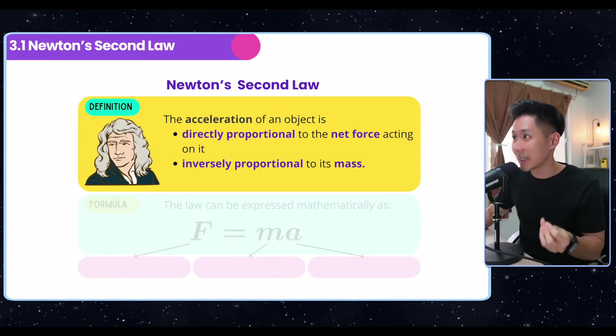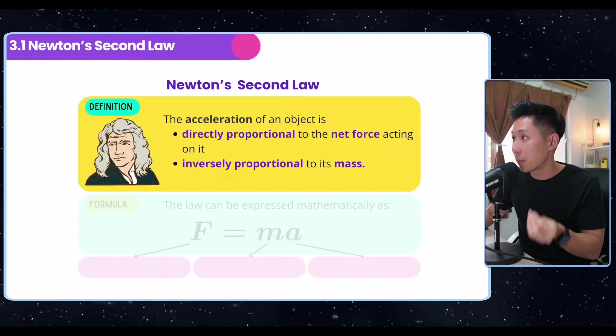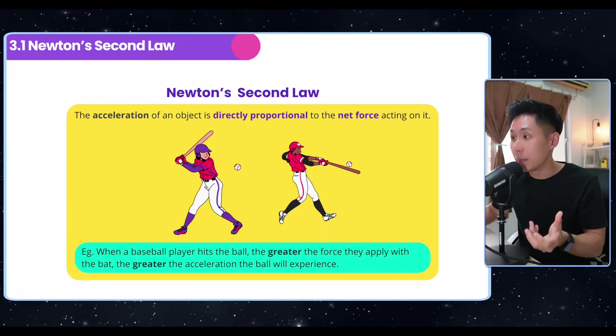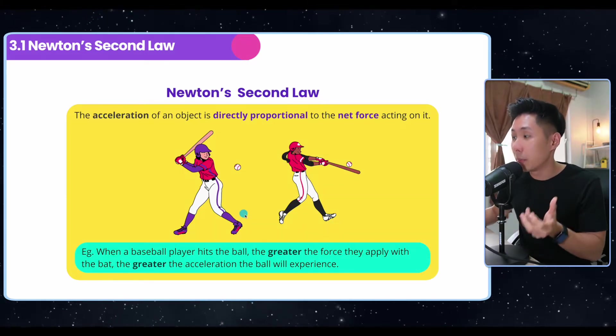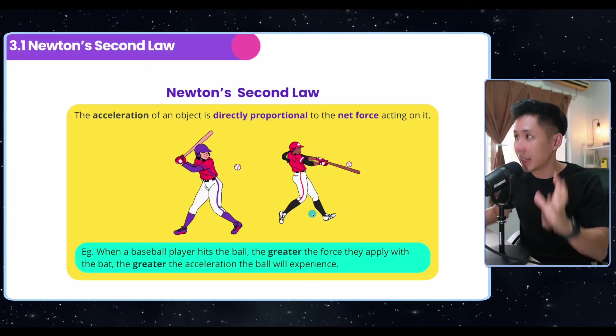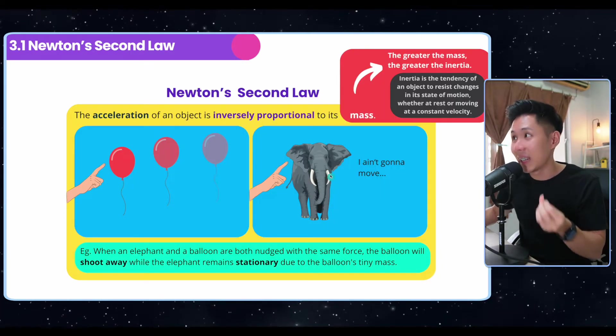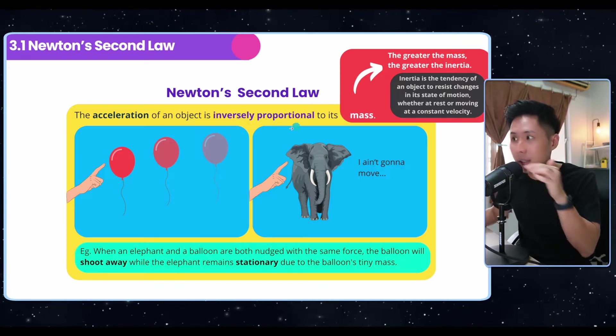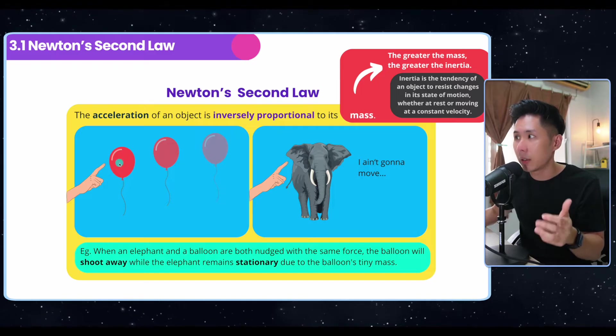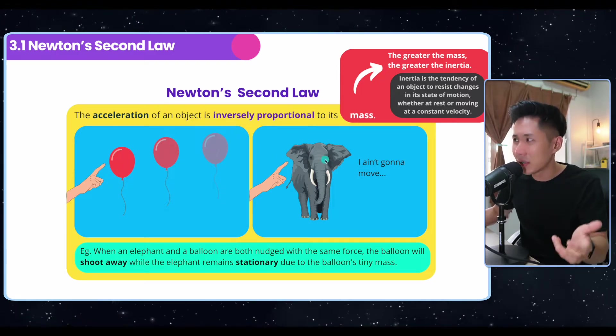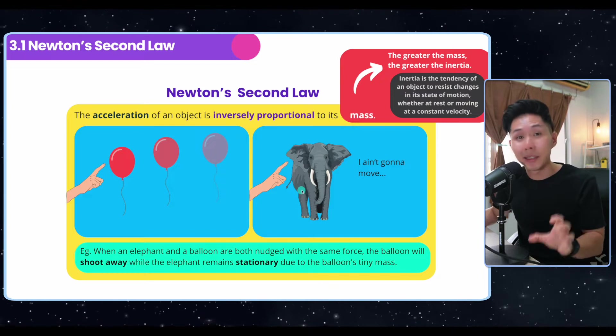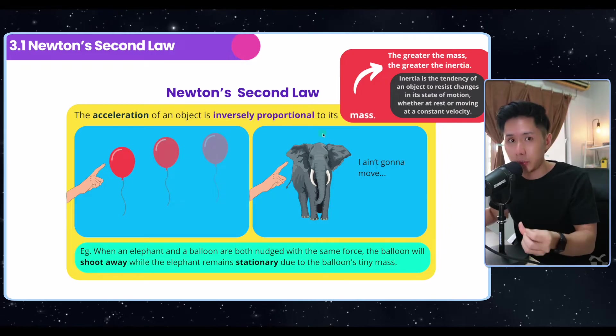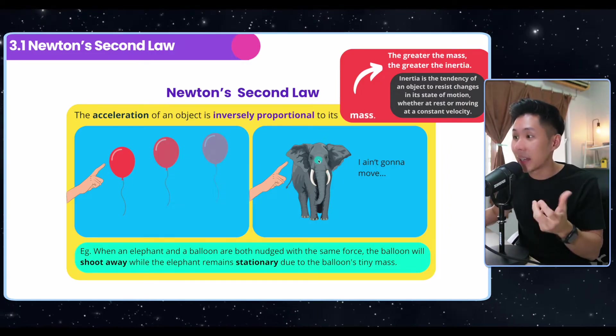Newton's second law says that the acceleration of an object is directly proportional to the net force acting on it. The first example shows that the harder the baseball player hits the ball, the ball will accelerate faster. Newton's second law also states that the acceleration of an object is inversely proportional to its mass. If I touch this balloon, it will accelerate, but if I touch this elephant, he's not going to move because of the large mass.